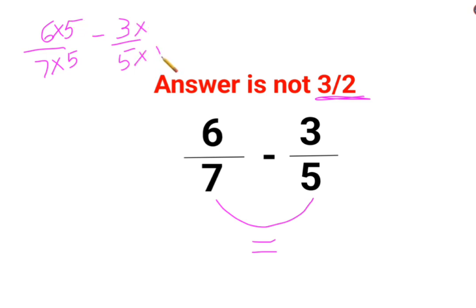Here also I will multiply by 7 and here also I will multiply by 7. So what happens is you got 30 divided by 35 minus 21 divided by 35.